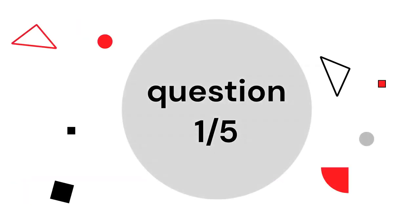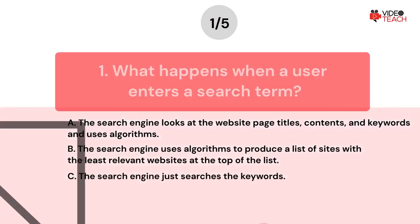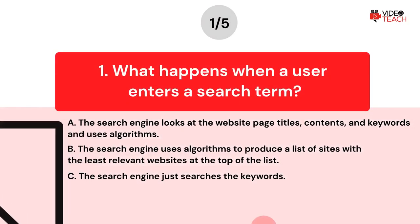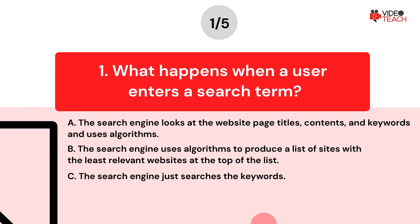Question number one. What happens when a user enters a search term? Option A: The search engine looks at the website page titles, contents, and keywords and uses algorithms. Option B: The search engine uses algorithms to produce a list of sites with the least relevant websites at the top of the list.